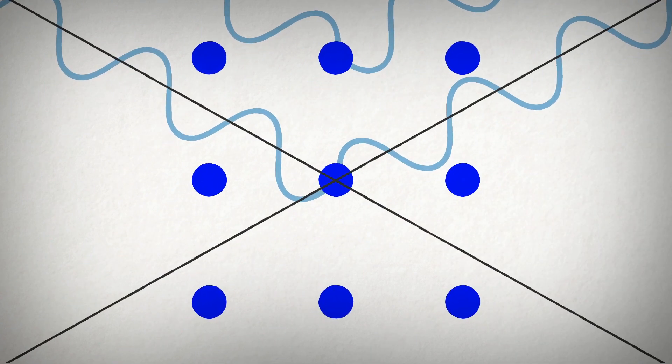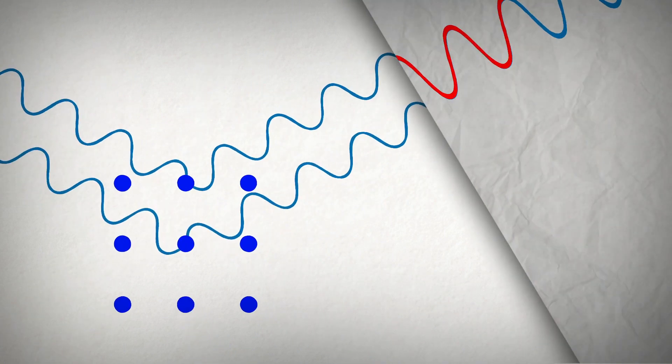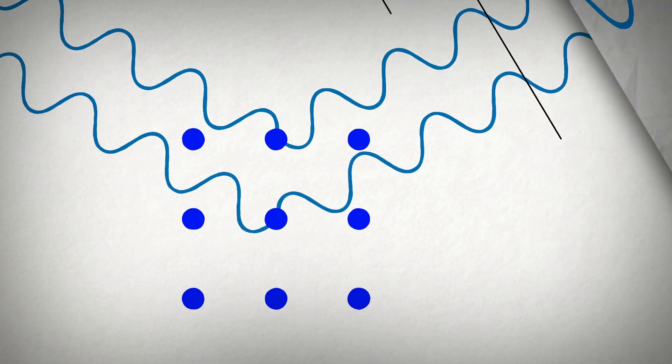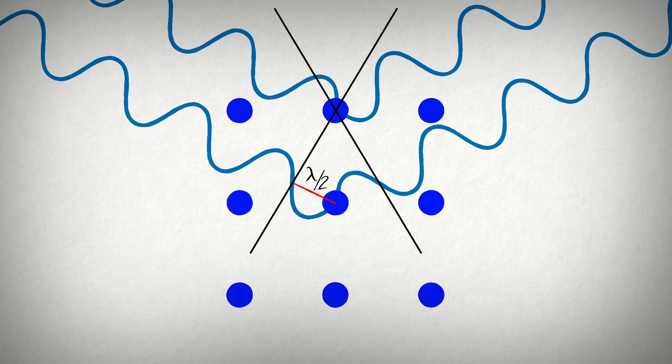The angle between the incident and scattered beams is called two theta. For constructive interference to occur, the scattered waves must be in alignment, meaning the second wave must travel a whole number of wavelengths. In this case, one half of a wavelength is traveled on the incident side, and one half of a wavelength is traveled on the scattered side, resulting in one additional wavelength.